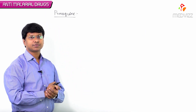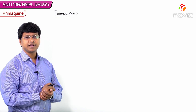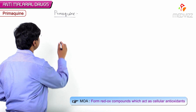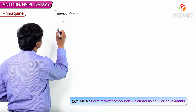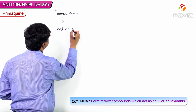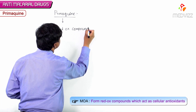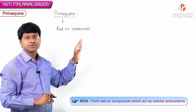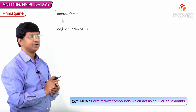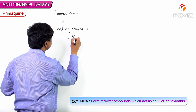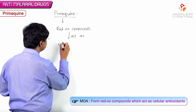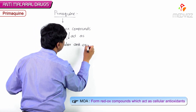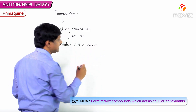Let me discuss the next antimalarial drug which is primaquine. The mechanism of action — primaquine acts by forming redox compounds. These redox compounds act as cellular antioxidants.